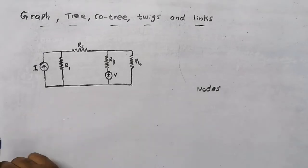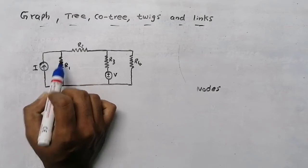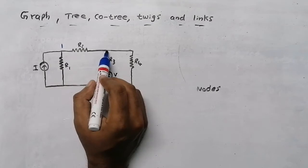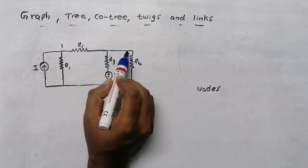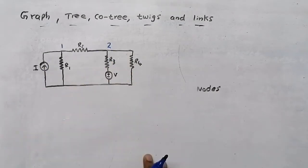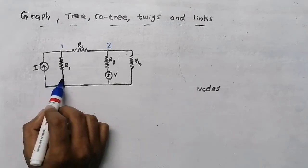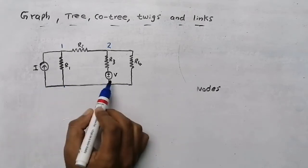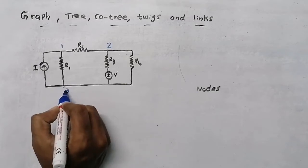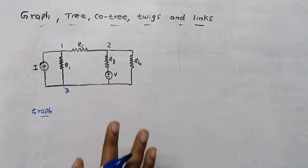From this figure we need to find the number of nodes. At this point, three elements are connected — a current source and two resistors — so this is node one. At this point, three resistors are connected, so this is node two. One more node is the ground node, where all four elements are connected — that is node three. So for this circuit there are three nodes.